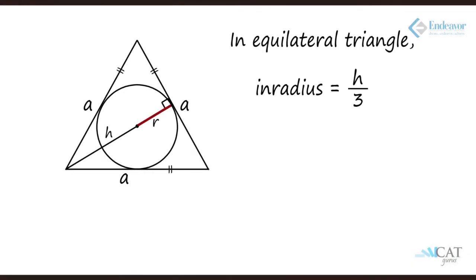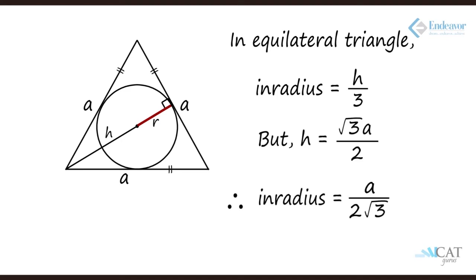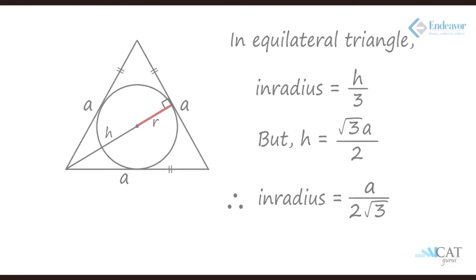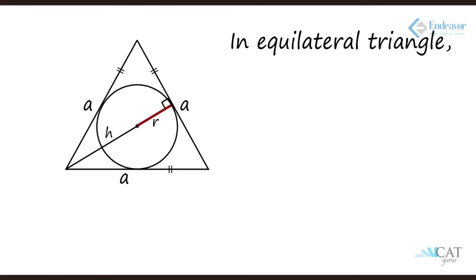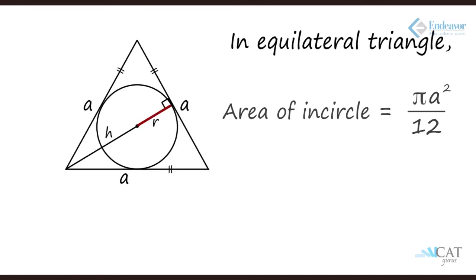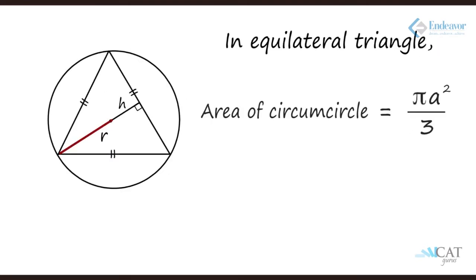The inradius of an equilateral triangle is h divided by 3, where h is the height, which equals the side divided by 2 root 3. Similarly, the circumradius is 2h divided by 3, which equals a divided by root 3. The area of the incircle is pi times a squared divided by 12, and the area of the circumcircle is pi times a squared divided by 3.